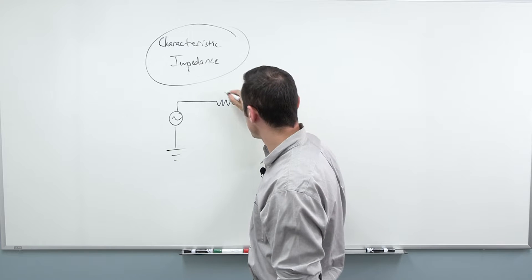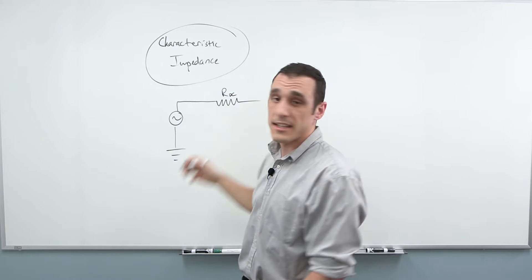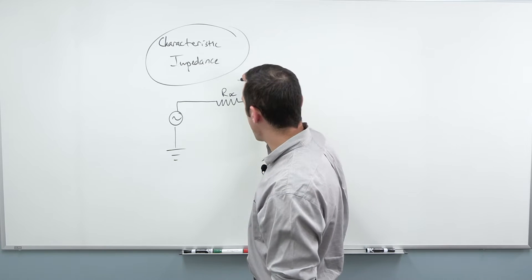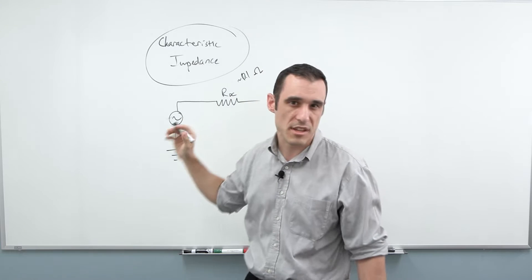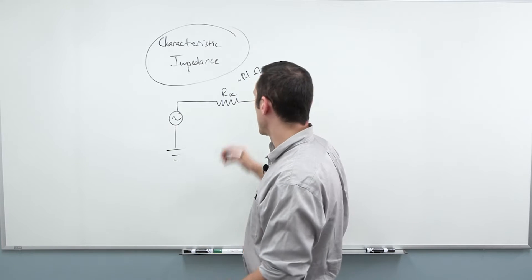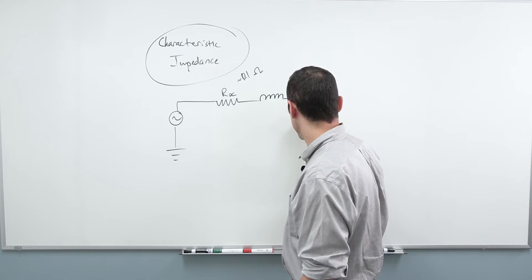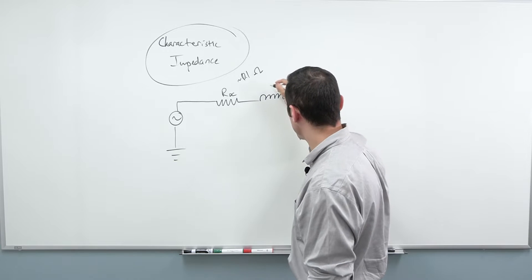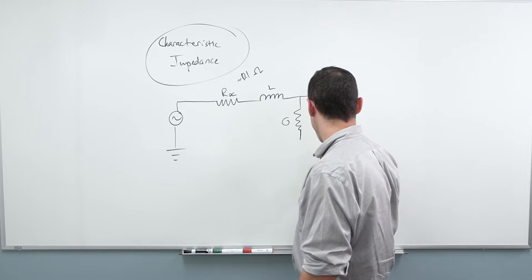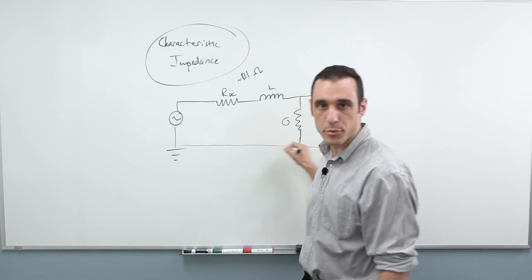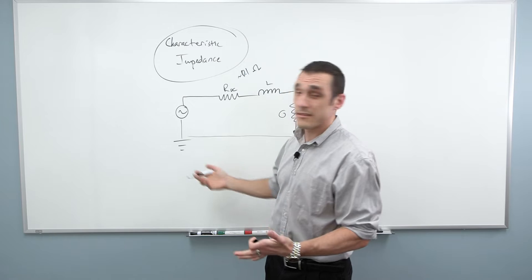First there's some series DC resistance. This is just from the fact that copper, which we use on printed circuit boards, doesn't have zero resistance. It's usually in the neighborhood of about 0.1 ohm or 1 ohm. What's more important is the inductance of the line. Then the line also has some equivalent leakage resistance. Here we use L, here we use G. Then it also has some equivalent capacitance, and this is all back to ground. These elements, my R, my L, my G, and my C combine to give me a characteristic impedance.